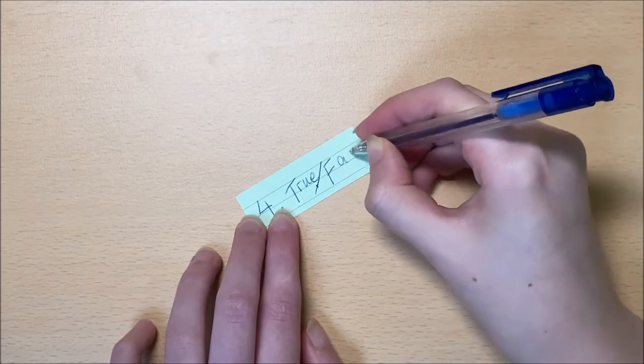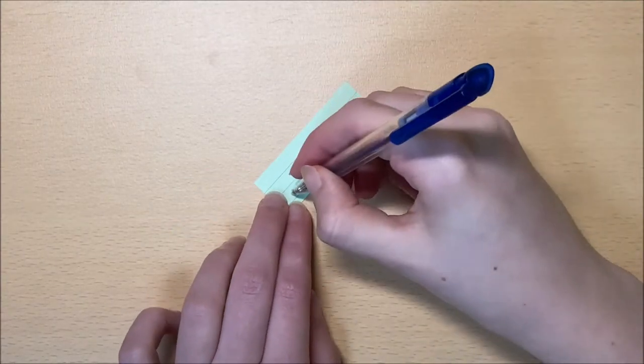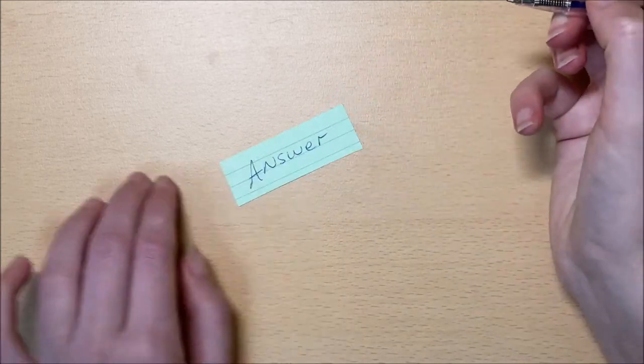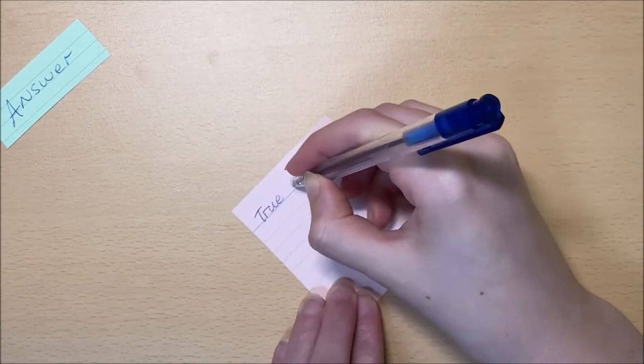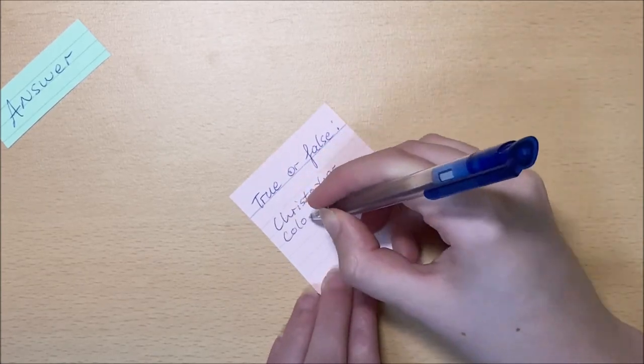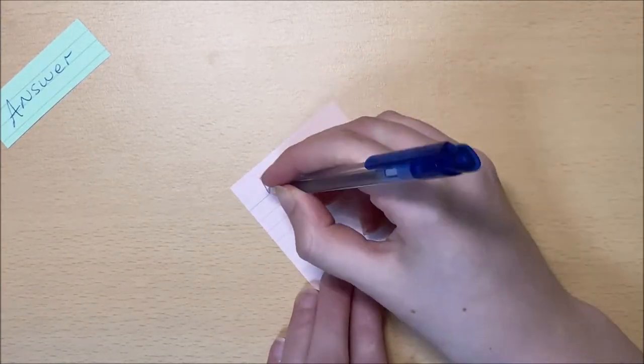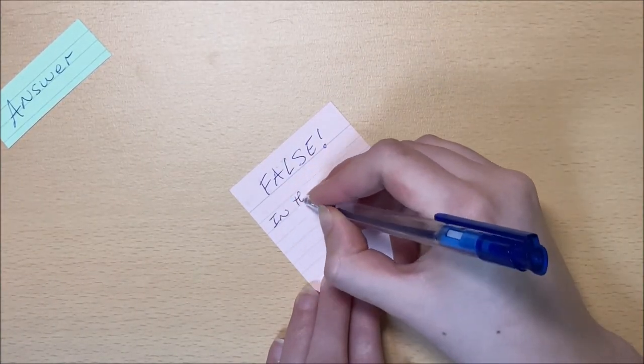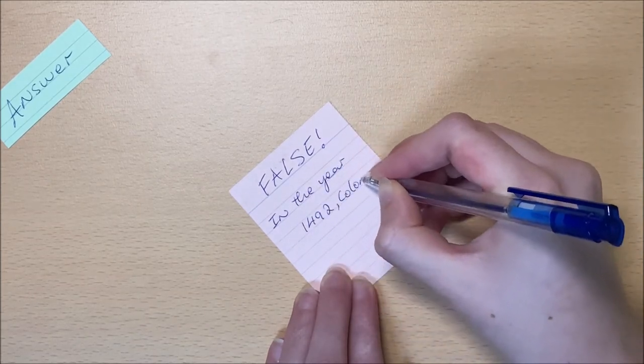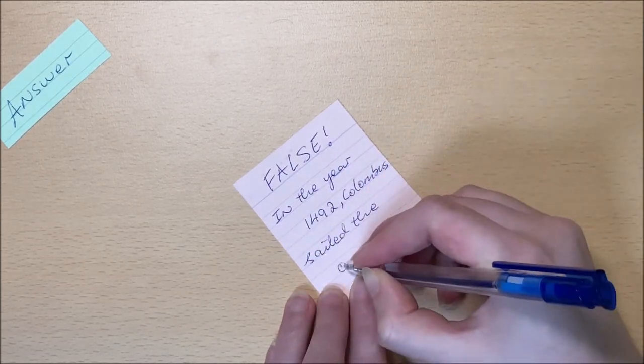Option number four are true and false questions. This is fairly self-explanatory. You have a question on the front asking true or false and you put the answer on the back. However, it is also helpful to further explain why an answer is true or false, as well as include any learning devices such as mnemonics that you might have learned to remember these answers.